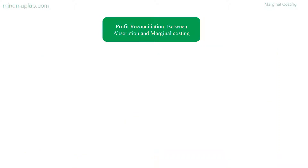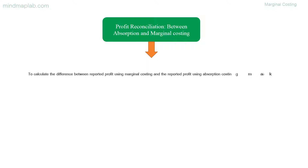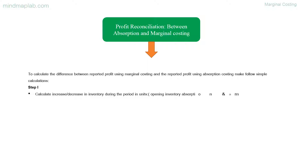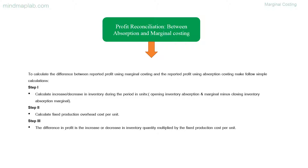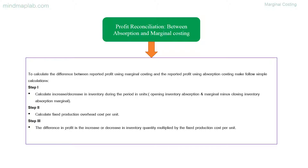Profit reconciliation between absorption and marginal costing: To calculate the difference between reported profits, follow three steps. Step 1: Calculate the increase or decrease in inventory quantity during the period in units — opening inventory minus closing inventory. Step 2: Calculate the fixed production overhead cost per unit. Step 3: The difference in profit is the increase or decrease in inventory quantity multiplied by the fixed production overhead cost per unit.